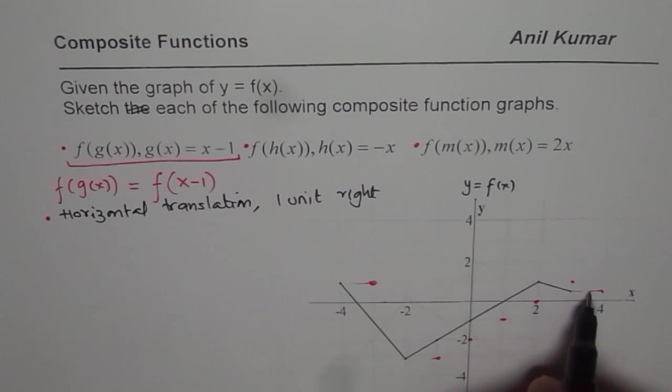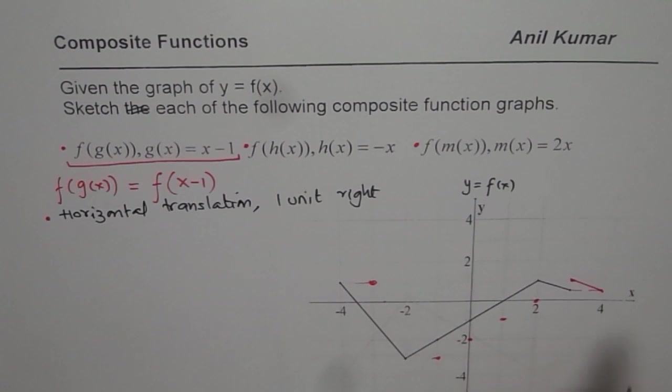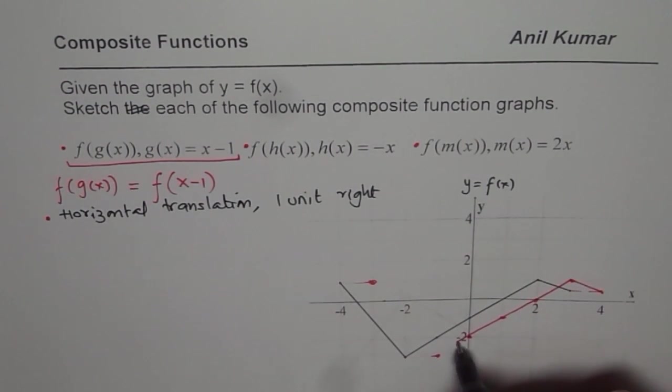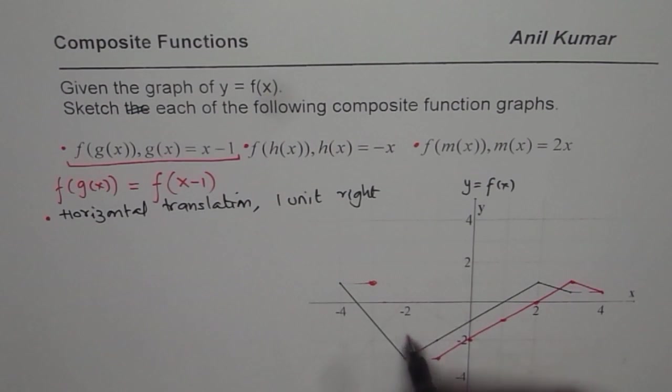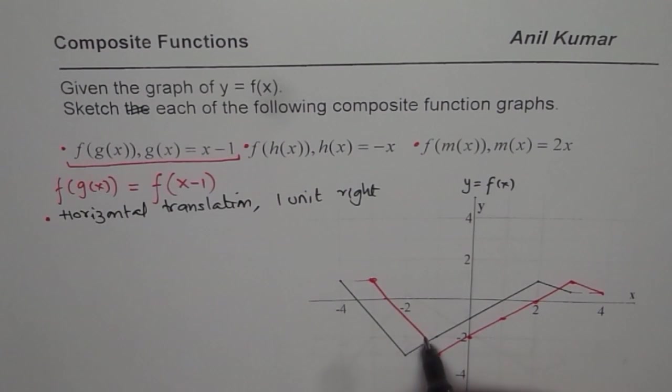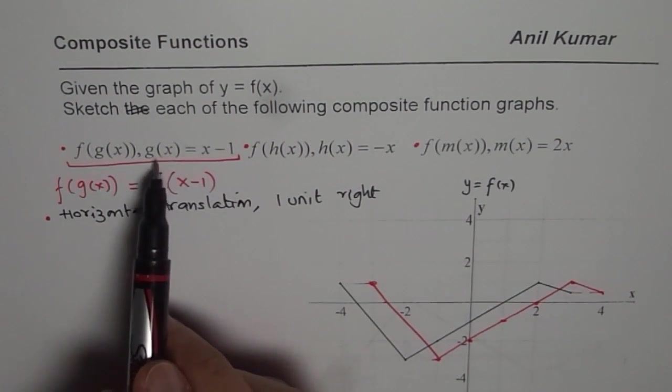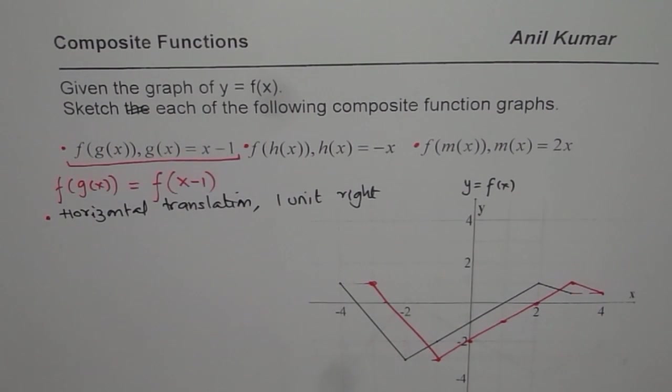So you get your graph. So let's start connecting from the extremes. We get this and connecting all these lines here. I think you can do a much neater job than this. So this graph is my first function where g of x is x minus 1. So that is how you can sketch the graph of composite function from the given function. That is the first one for us.